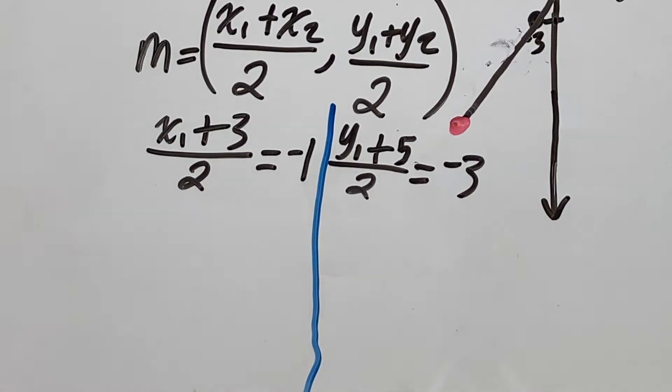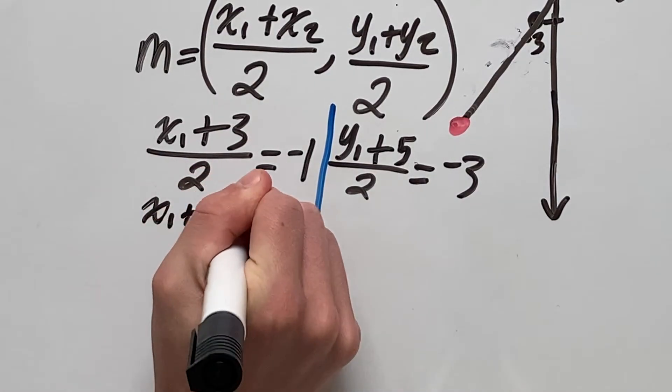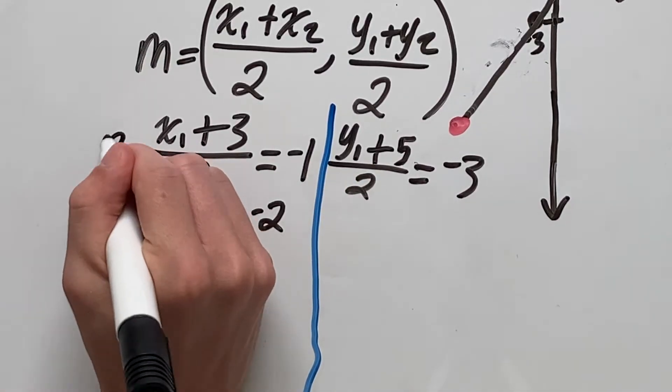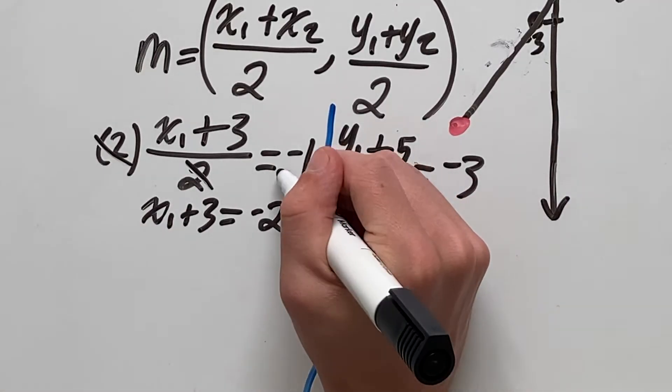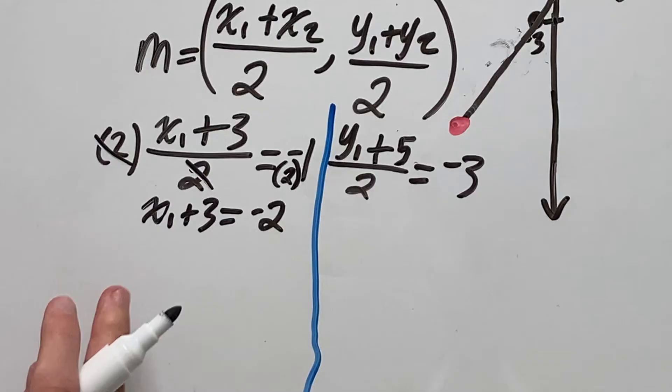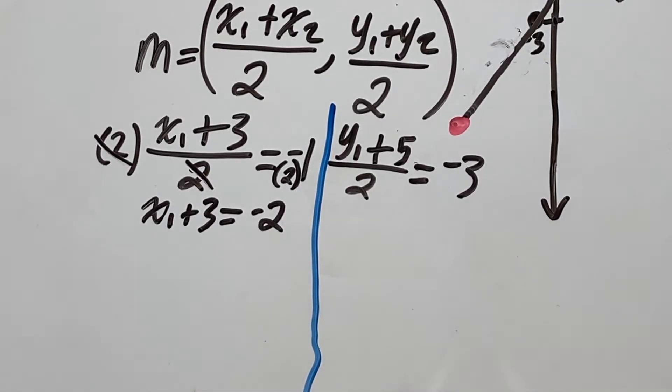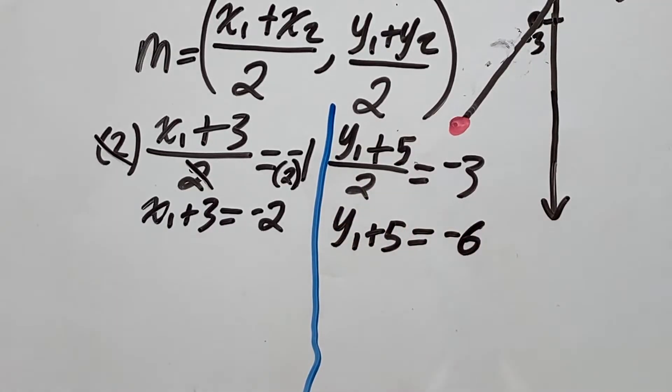So first we want to get rid of this 2 on bottom. So multiply both sides by 2, that will give you x1 plus 3 equals negative 2, since the 2 eliminated here and here. And once you multiply 2 on this side, 2 times negative 1 is negative 2. We'll do the same on this side. So multiply both sides by 2, that will give us y1 plus 5 equals negative 6.